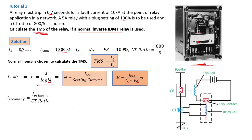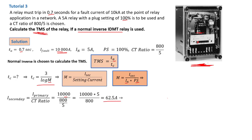We calculate the secondary current by replacing the primary current with 10,000 amps and dividing by the CT ratio of 800/5. This gives a secondary current of 62.5 amps. Then m = 62.5 / (5 × 1), where 5 is the nominal current and 1 represents the 100 percent plug setting. That gives us m = 12.5.